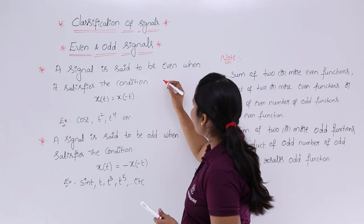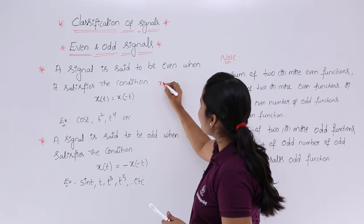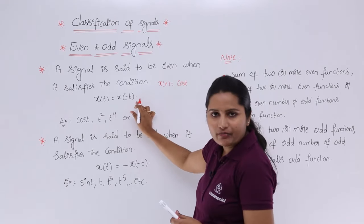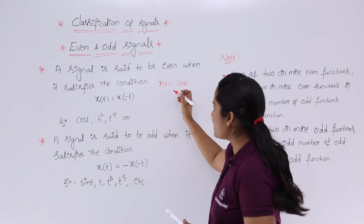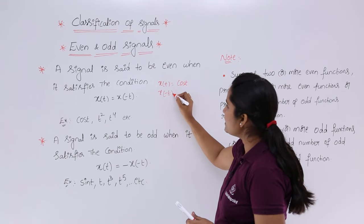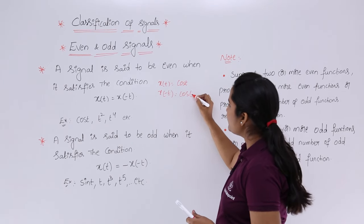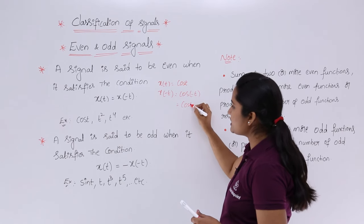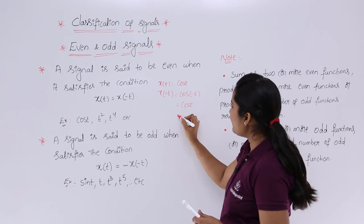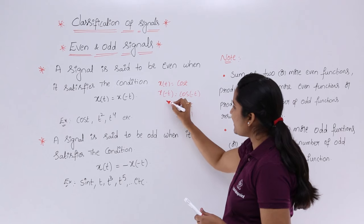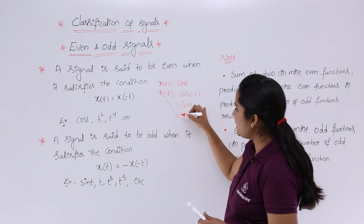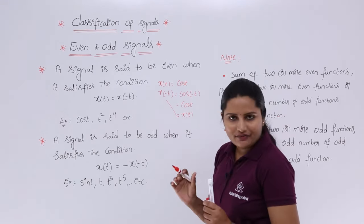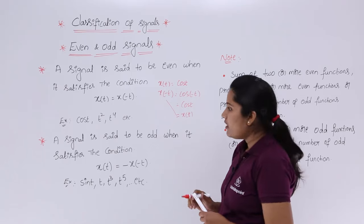For example, if you are having a signal x(t) = cos(t), if you calculate x(-t), you are getting x(-t) = cos(-t). You know cos(-t) = cos(t), so you are again getting the same x(t). So you are satisfying x(t) = x(-t) condition, therefore cos(t) is an even signal.